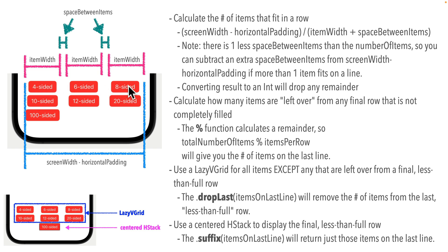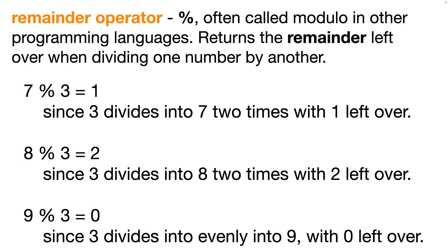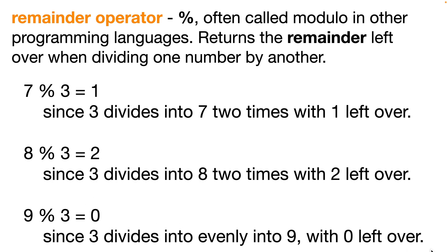Once we know how many items fit in a row, how do we find how many are left over? Swift has a remainder operator — the percentage sign. Don't confuse it with percentages; it returns a remainder value, not a percentage. Most languages call this modulo. For example, 7 % 3 equals 1, since 3 goes into 7 twice with 1 left over. 8 % 3 gives 2. 9 % 3 gives 0 because 3 divides evenly into 9. We use this to get the number of items left over in a less-than-full row.